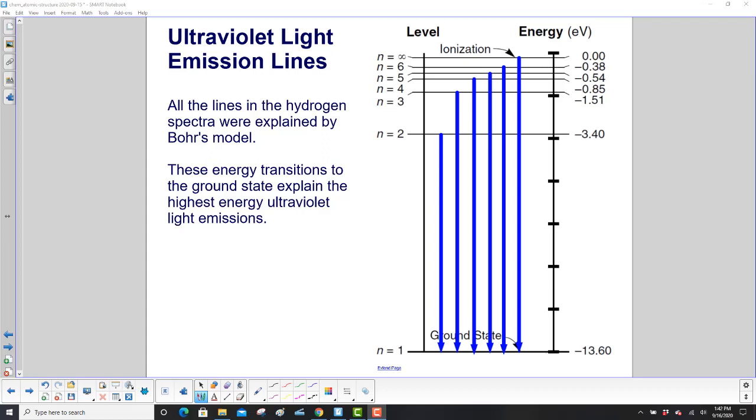All the lines in the hydrogen spectrum were explained by Bohr's model. Starting with the n equal 2 to n equal 1 transition, the 120 nanometer line, and all of these had the highest energy ultraviolet light emissions.